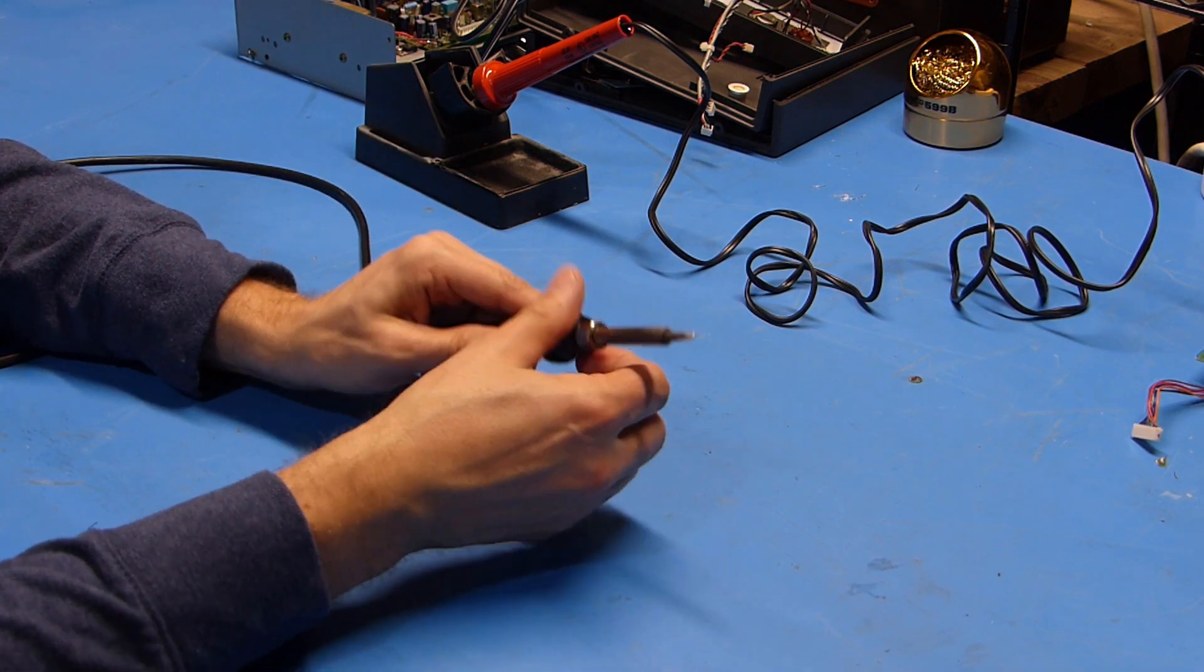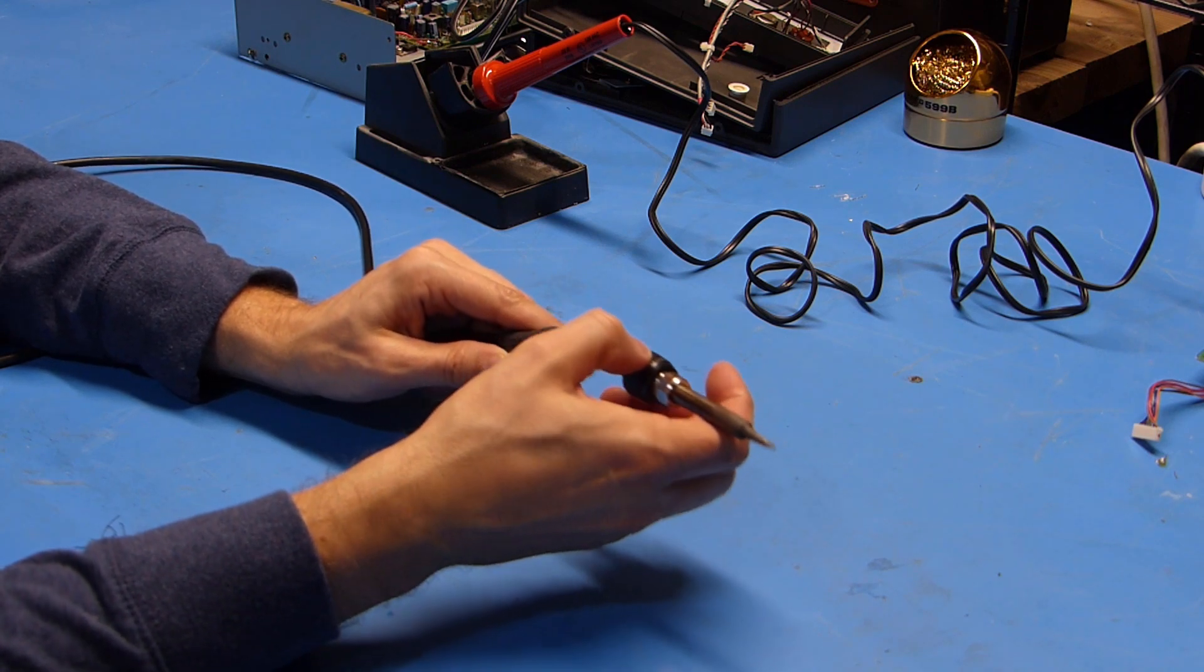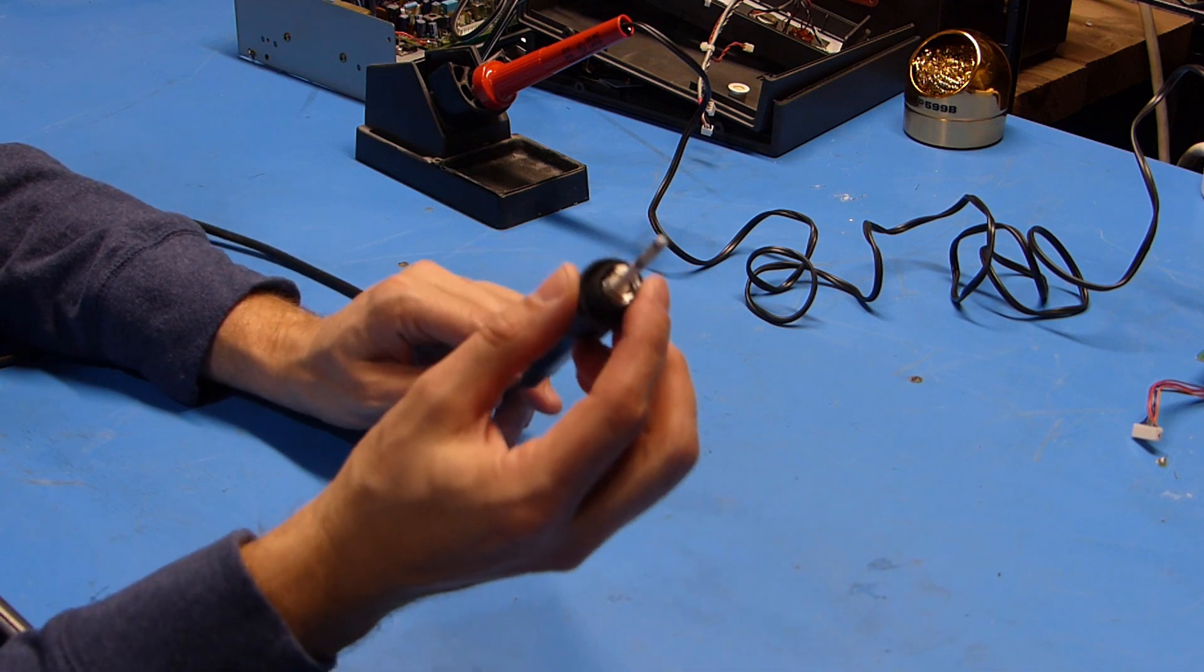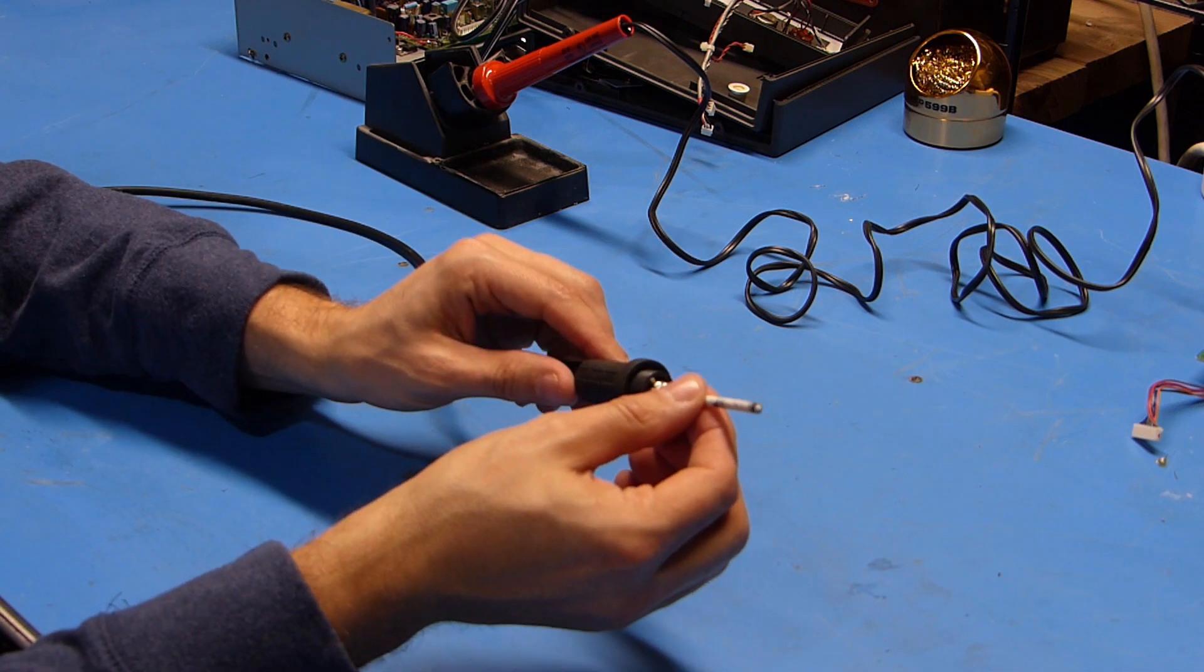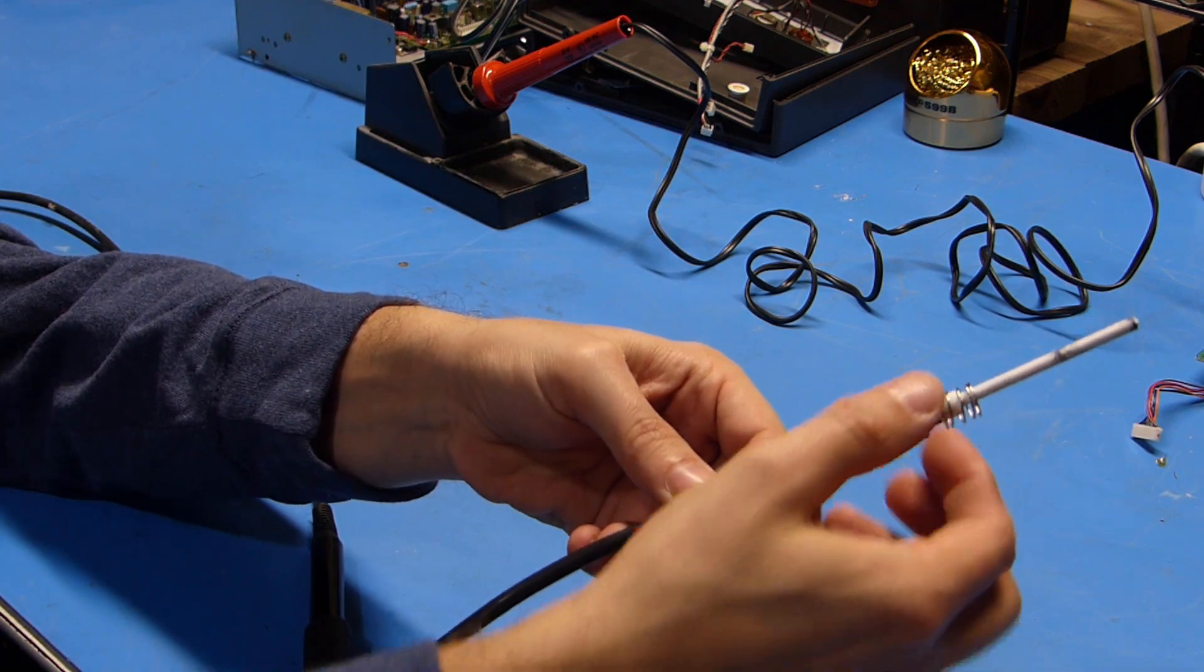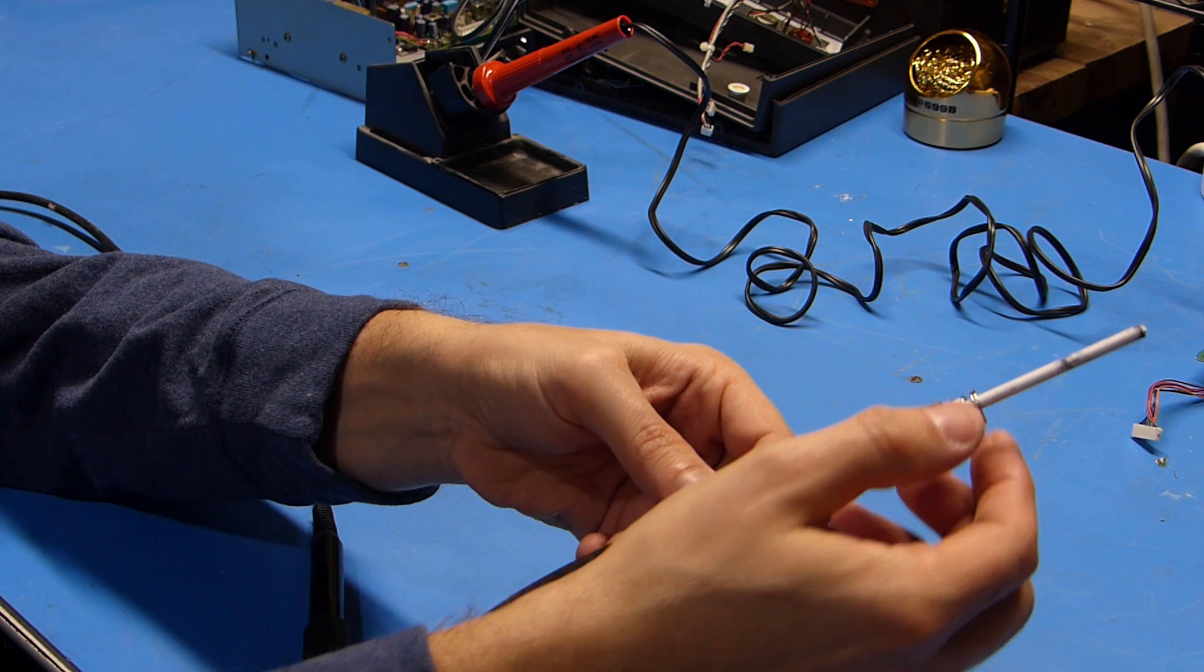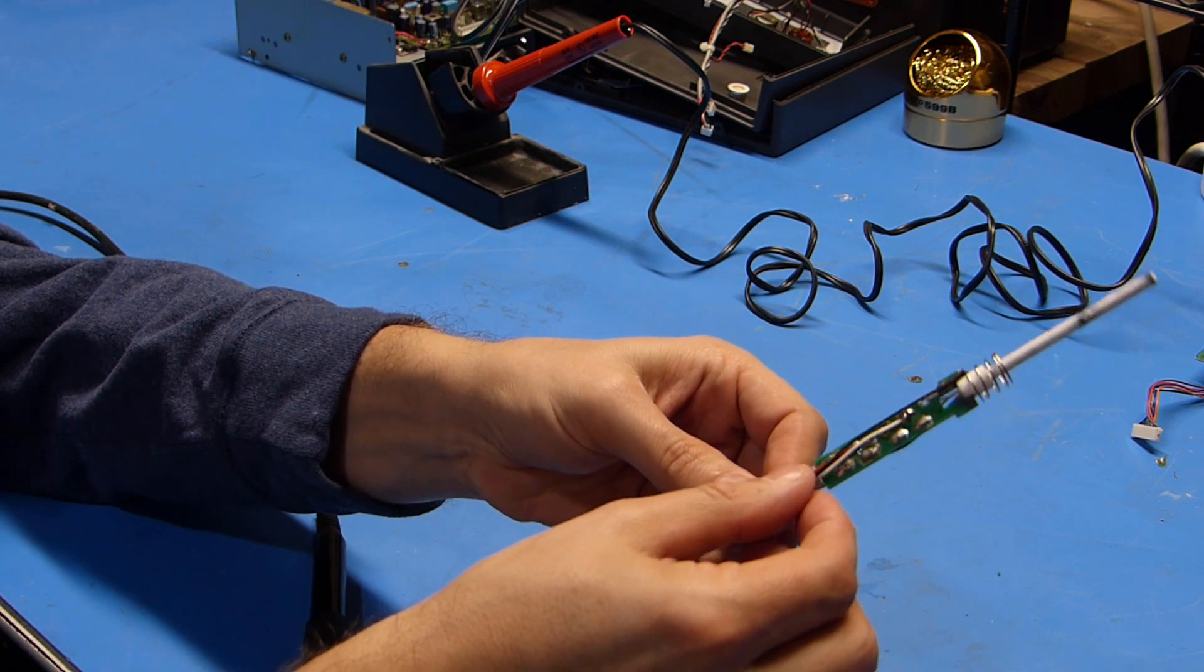I'll just unscrew the tip here and pull that off and set it aside. You can see there's the heating element in this iron. This just slides out of the base. You can see the heating element itself, there's a spring here to help ground everything and then this little circuit board to mount all these wires to.